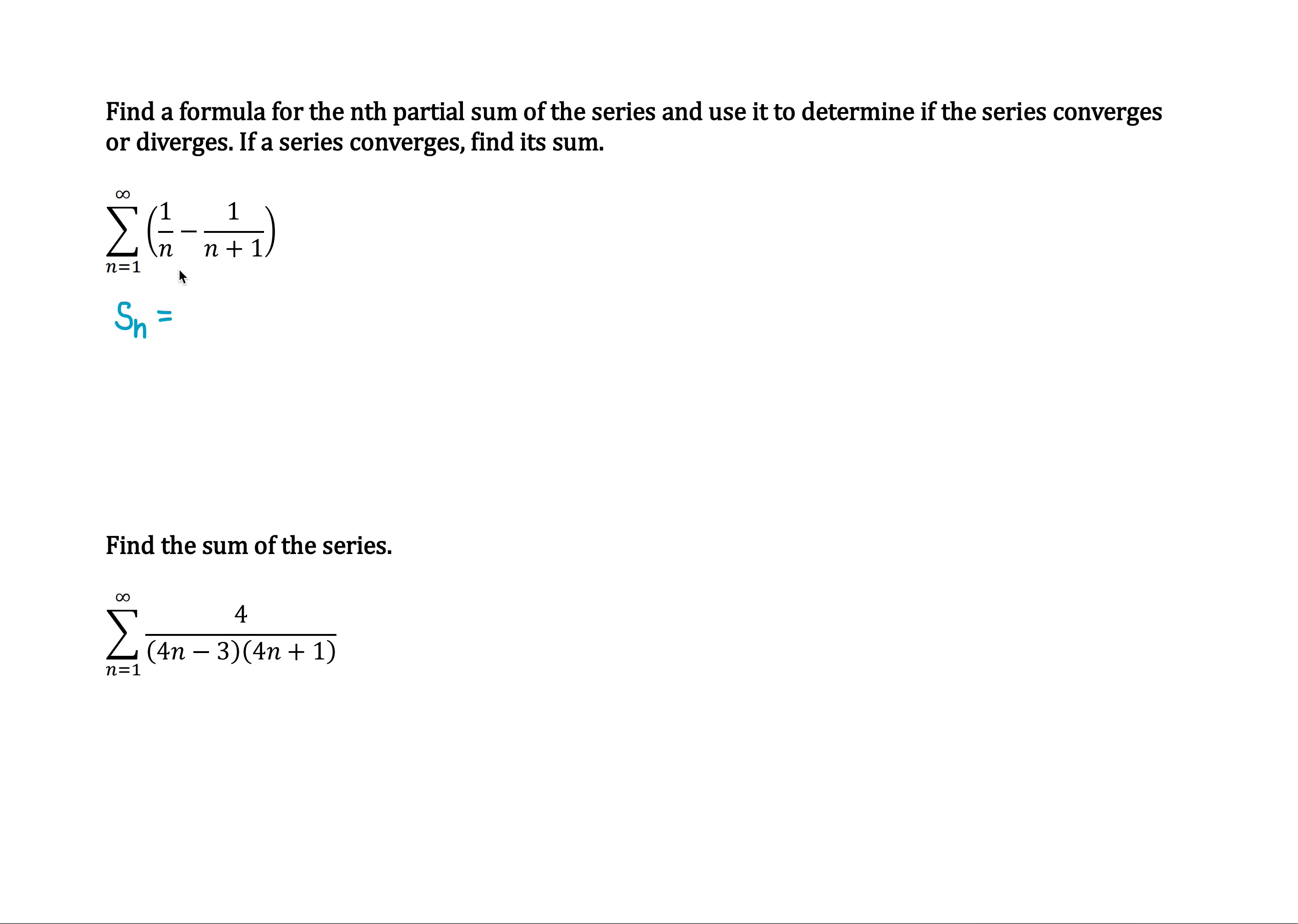So it would be equal to, we'll start with n equals 1: 1 minus 1 half plus, now we move to n equals 2: 1 half minus 1 third, then n equals 3: 1 third minus 1 fourth.